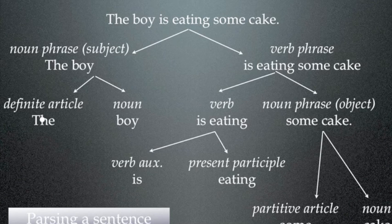Now 'the boy,' the subject, can be further broken down into a definite article, 'the,' and into a noun, 'boy.' The verb phrase is broken down into the verb itself and a noun phrase which forms the object of the sentence.